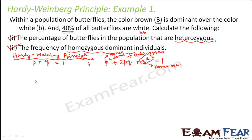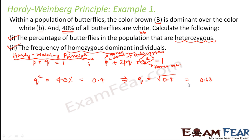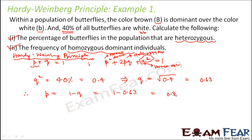So as per the question, q² = 40%, which is 0.4. From this, q = √0.4 ≈ 0.63. Now with q, we can find p: p = 1 − q = 1 − 0.63 = 0.37.